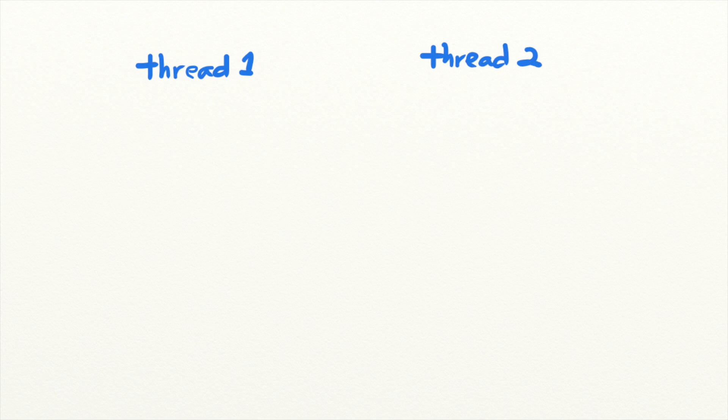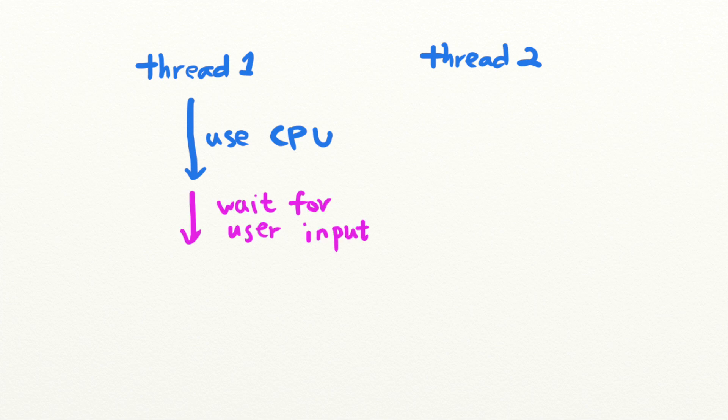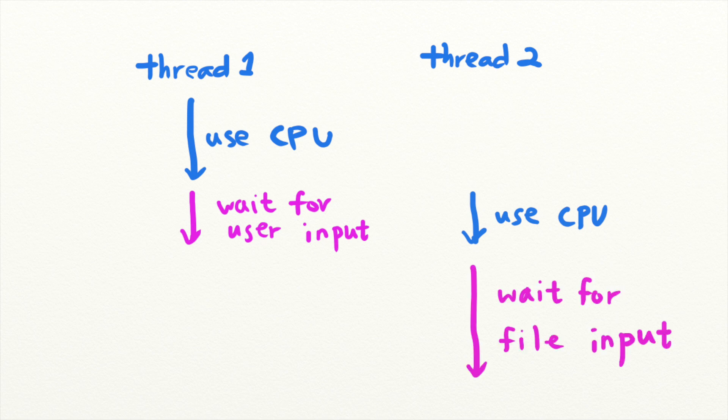These threads don't all execute at the same time, but take turns using the CPU's computational power. With multi-threading, other threads can continue taking advantage of the unused computing resources while they are idle. For example, when one thread is suspended while waiting for user input, another can take over the CPU to execute its computations.